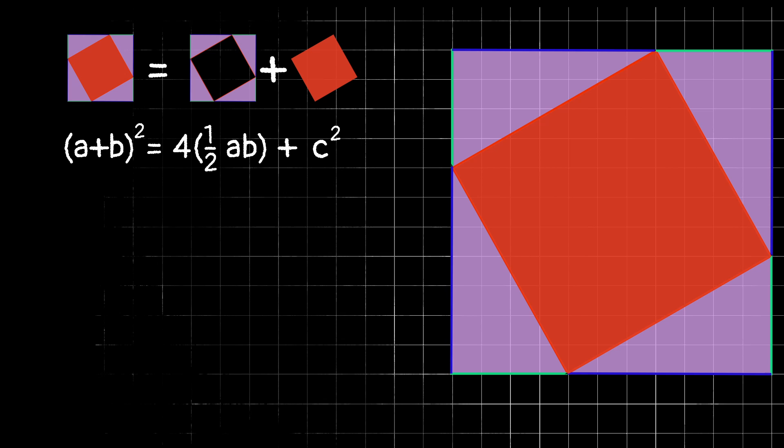So, just simplifying through with algebra, we know that a plus b quantity squared equals a squared plus 2ab plus b squared. And on the other side of our equation, we can simplify this to 2ab plus c squared. We have 2ab on both sides, so those will cancel out. We can subtract 2ab from both sides and get rid of it.